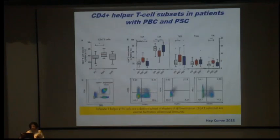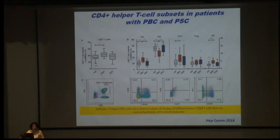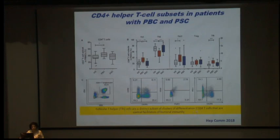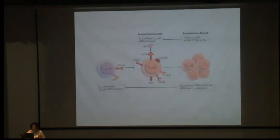In a Hepatology Communications 2018 paper, they took PBC, PSC, and healthy donors and found CD4 T cells were significantly increased. TH2 population was low in PBC but high in PSC. TH17 and T-FH populations were elevated. Follicular helper T cells — T-FH — are a distinct subset of CD4 T cells that are central facilitators of humoral autoimmunity, driving autoantibody production. In normal homeostasis, IL-2 inhibits T cells, but in autoimmune diseases, SNPs in IL-2RA and IL-2RB disrupt this.